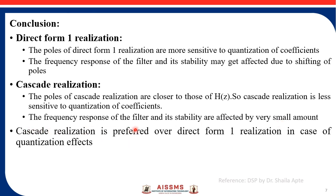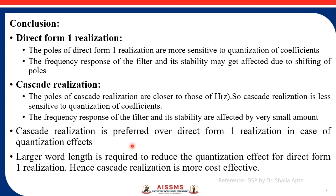Therefore, cascade realization is preferred over direct form 1 realization in case of quantization effects. Larger word length is required — previously we quantized the filter coefficients to 4 bits, but if we want to reduce the quantization error, the number of bits used should be more. Therefore, larger word length is required to reduce the quantization effect for direct form 1 realization, and cascade realization is more cost effective.